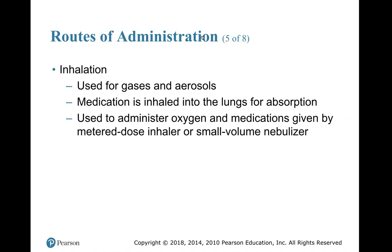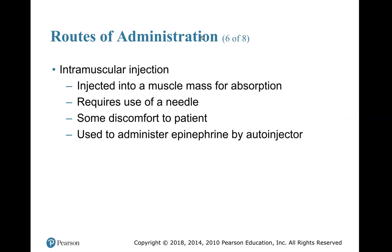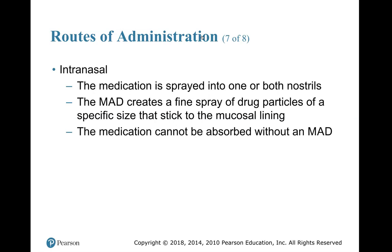Inhalation route is used for gases and aerosols — medication is inhaled into the lungs for absorption. Used to administer oxygen and medications given by metered-dose inhaler or small volume nebulizer. Intramuscular route: injected into a muscle mass, requires use of a needle, some discomfort to the patient. Used to administer epinephrine by autoinjector. You can also administer Narcan by autoinjector. Intranasal: medication is sprayed into one or both nostrils using the MAD (mucosal atomizer device), which creates a fine spray of drug particles that stick to the mucosal lining. The medication cannot be absorbed without an MAD.